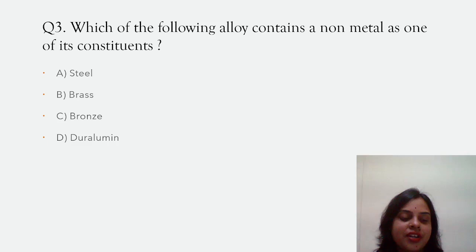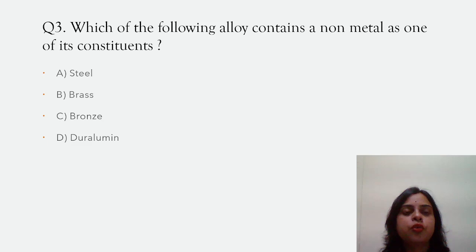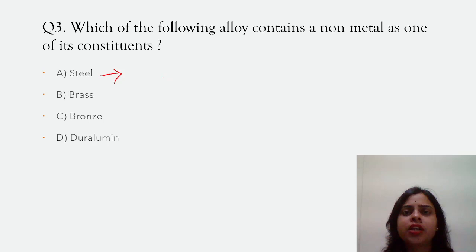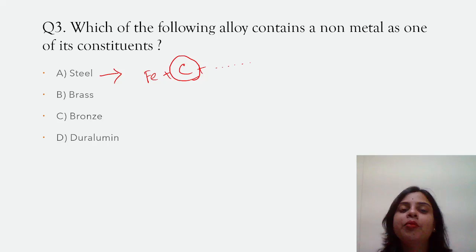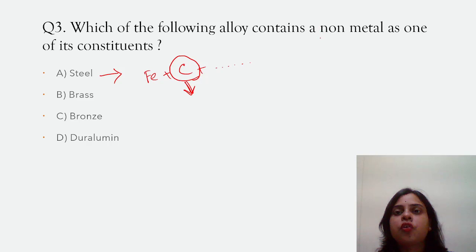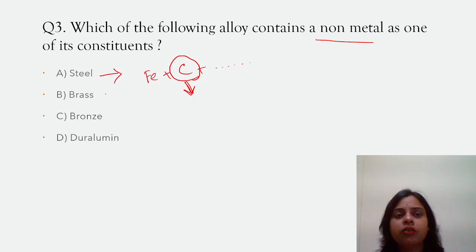Which of the following alloys contains a non-metal as one of its constituents? The options are steel, brass, bronze, and duralumin. The composition of steel includes iron and carbon. Carbon is a non-metal. So from among these alloys, steel is the alloy that contains a non-metal as one of its constituents. Brass, bronze, and duralumin will be discussed further.